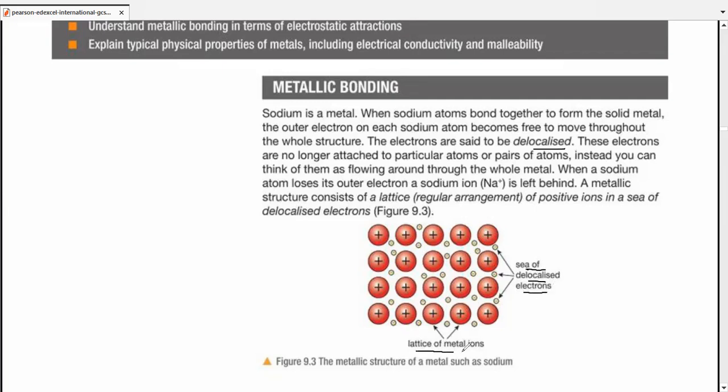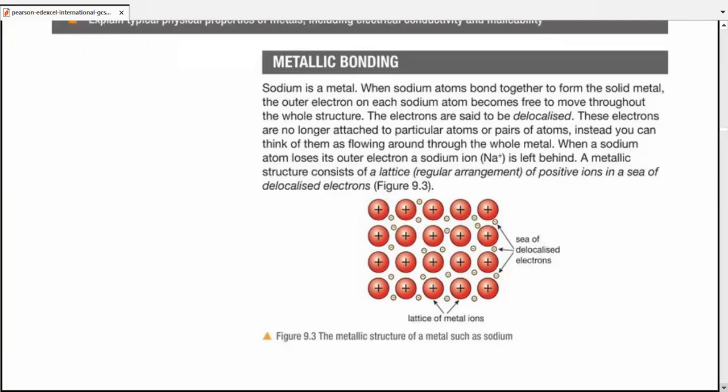And we have a lattice of metal ions. So a metallic structure consists of lattice regularly arranged of positive ions in a sea of delocalized electrons. Let's clear it up, move forward. Now, from this one single diagram, we can explain the metallic bonding as well as the behavior of metals.